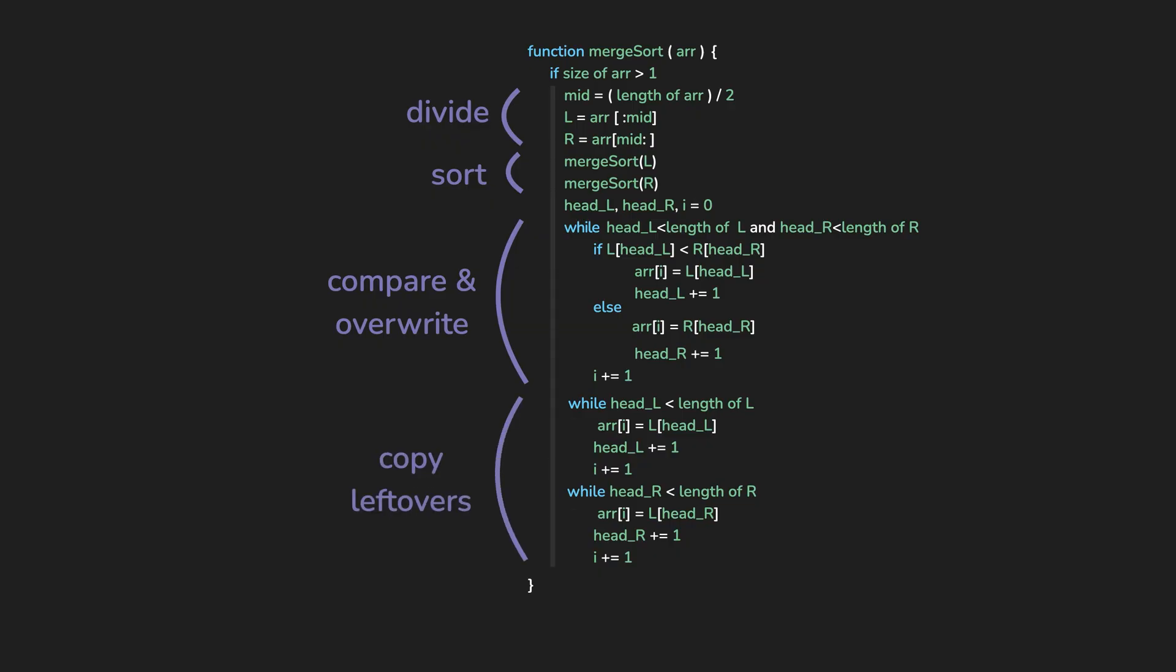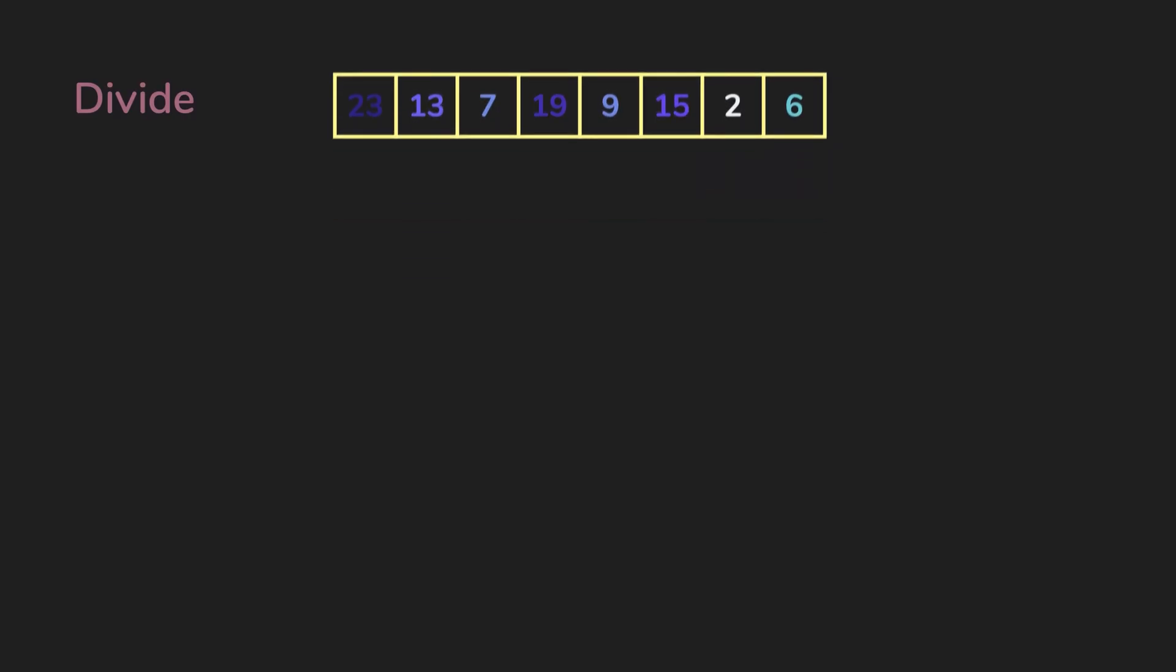Then we just put the leftovers in the original array one by one. To visualize the recursion, you could think of it like this. We initially have the array 23, 13, 7, 19, 9, 15, 2, and 6. Then we divide the two arrays.